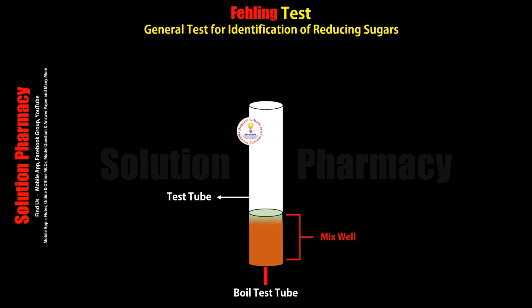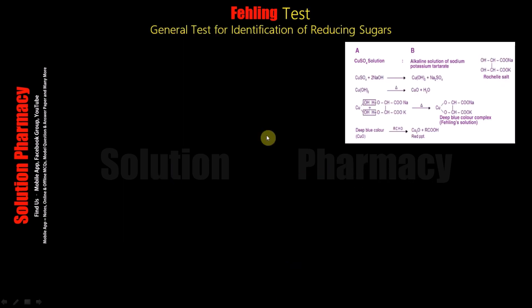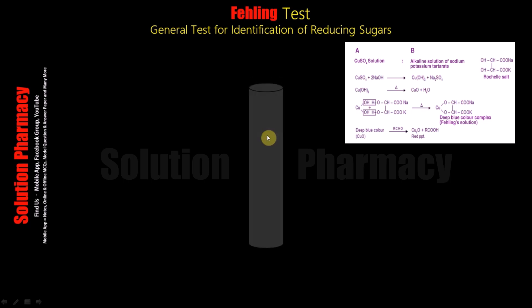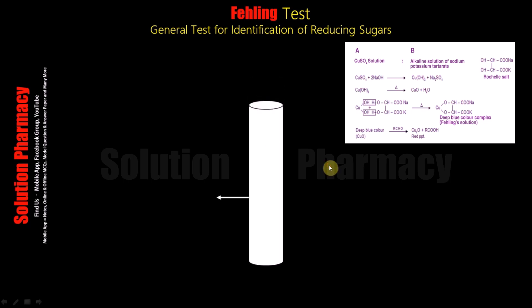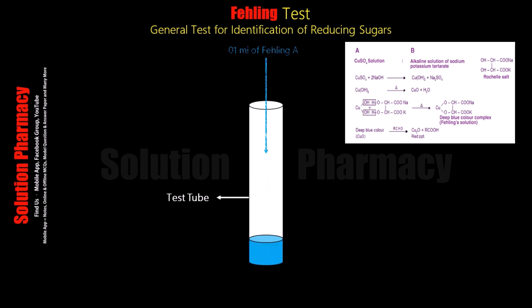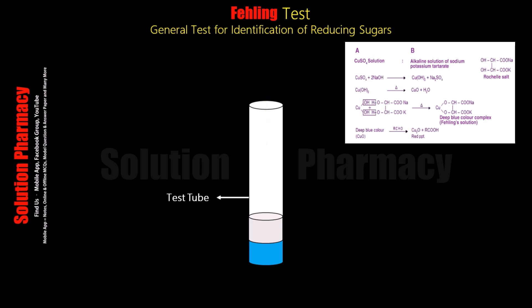Fehling's test is the identification test for reducing sugars. To start the procedure, take a clean and dry test tube and transfer one ml of Fehling's solution A with the help of a pipette. Then add one ml of Fehling's solution B into the same test tube. After transferring equal volumes — one ml each of Fehling's solution A and B — mix the contents of the test tube.